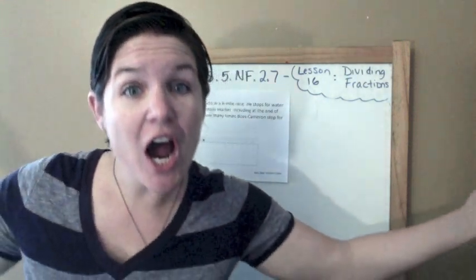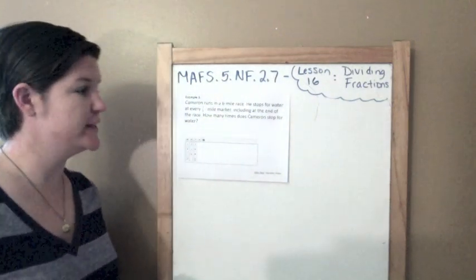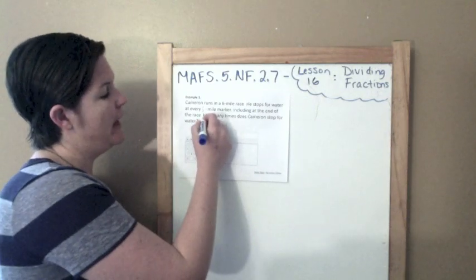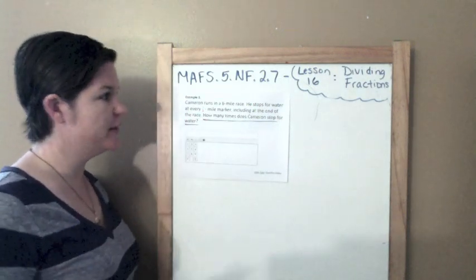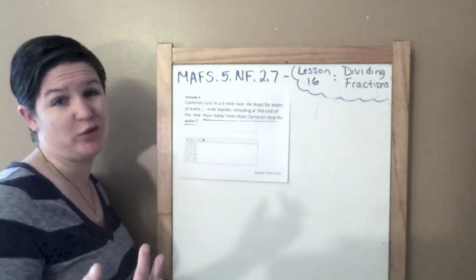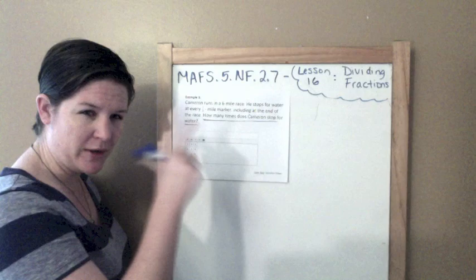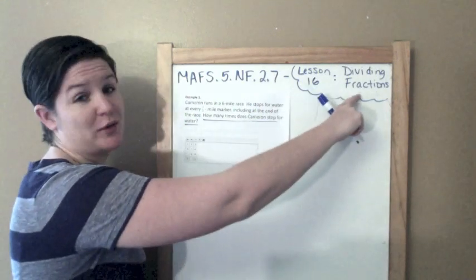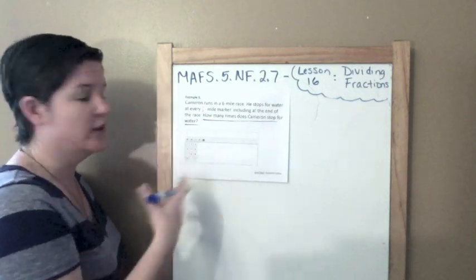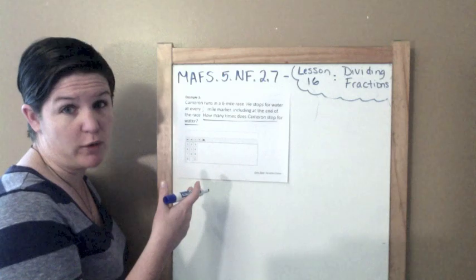Example one: Cameron runs in a six-mile race. He stops for water at every half-mile marker, including at the end of the race. How many times does Cameron stop for water? Some kids might just jump into adding, subtracting, multiplying, or dividing, but let's make sense of it first. I think I know it's division — one because we're dividing fractions — but on the FSA you need to understand what the question is asking.